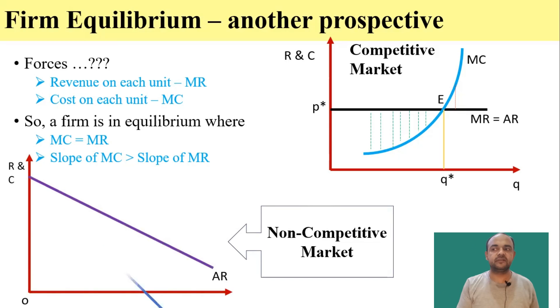Same is the situation in non-competitive market. However, here marginal revenue and average revenue are not equal and they are not horizontal straight line but they are downward sloping curves. Rest remains the same.